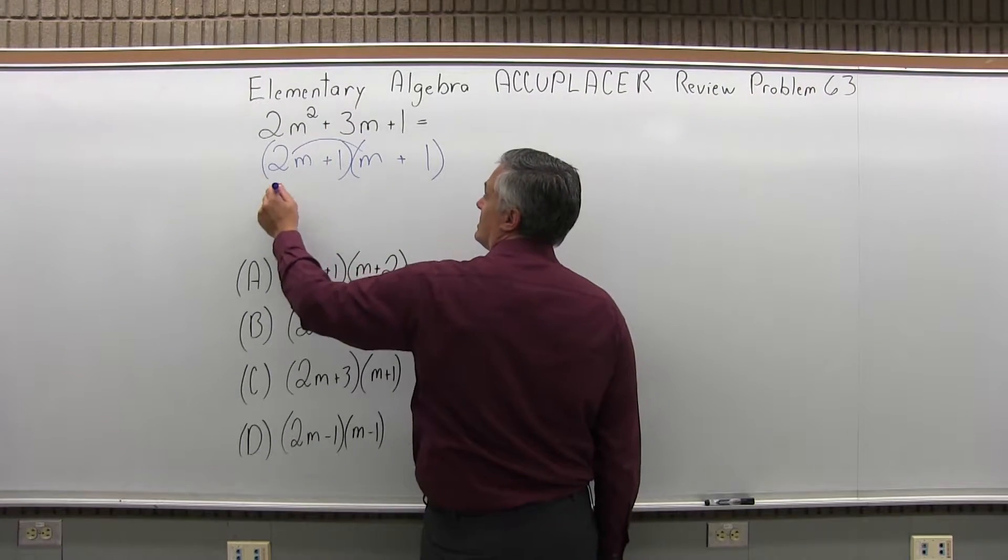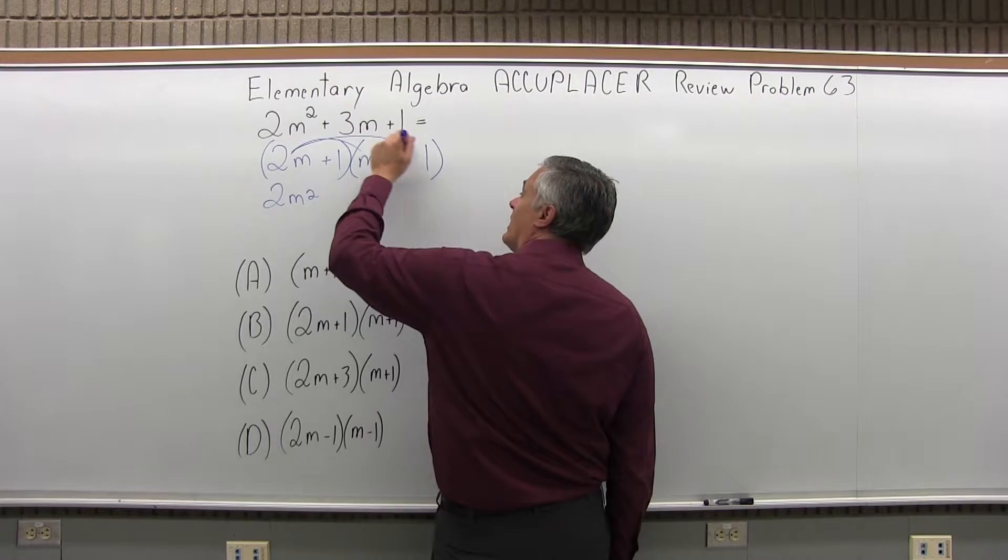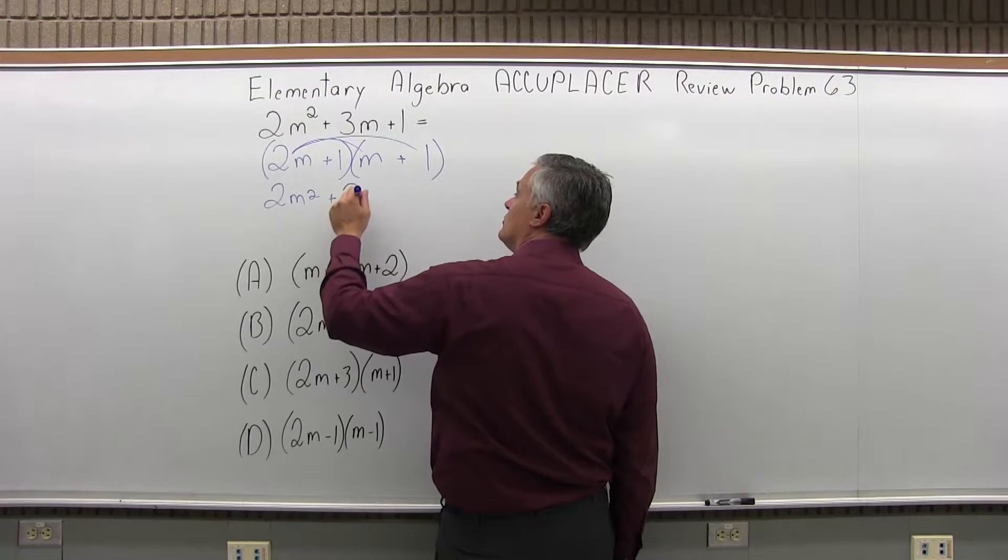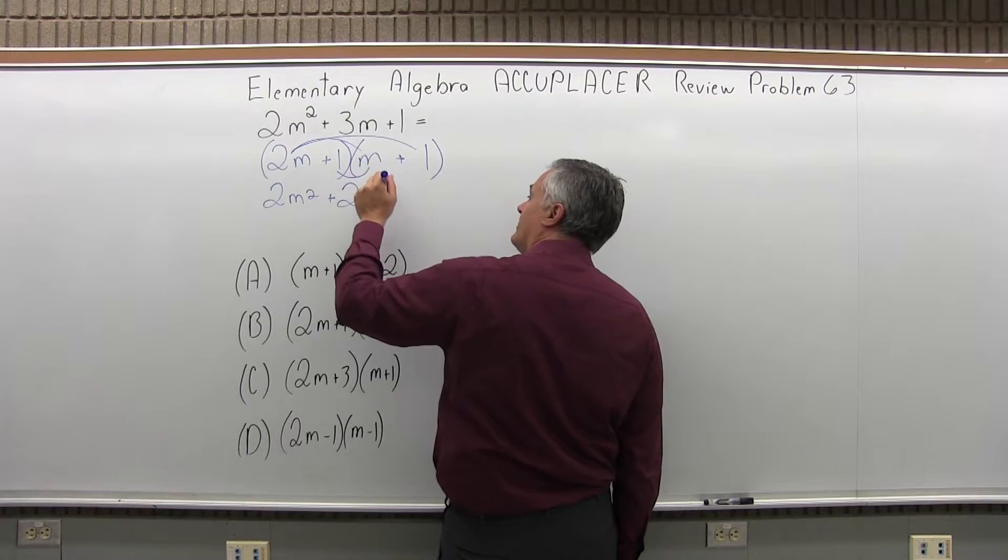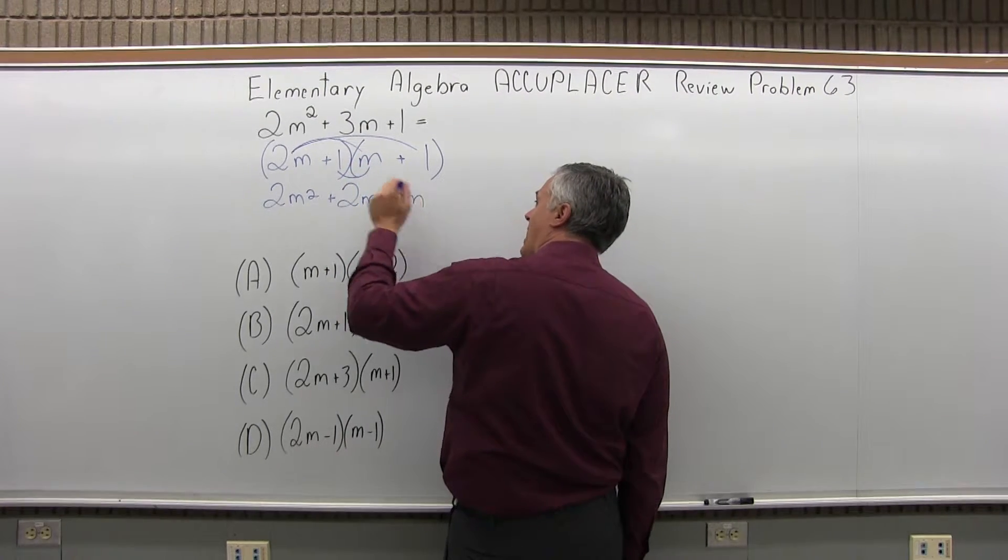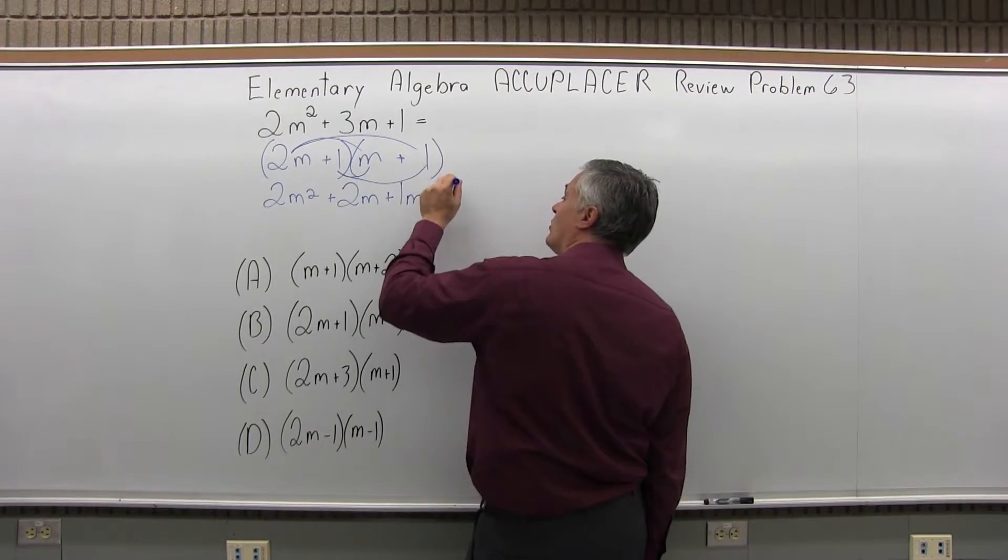2m times m is 2m². 2m times 1 is 2m. Then 1 times m is 1m and 1 times 1 is 1.